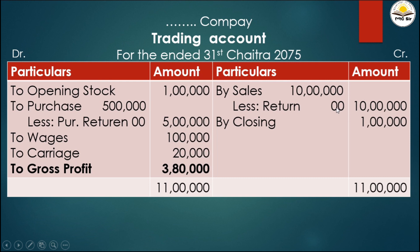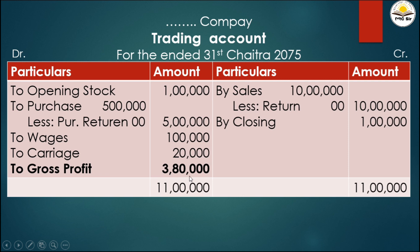From additional information number one, closing stock is 1 lakh rupees, so it goes on the credit side of the trading account. Total credit side: 10 lakh plus 1 lakh equals 11 lakh. The balancing figure gives us gross profit of 3 lakh 80 thousand. The trading account totals match on both sides.